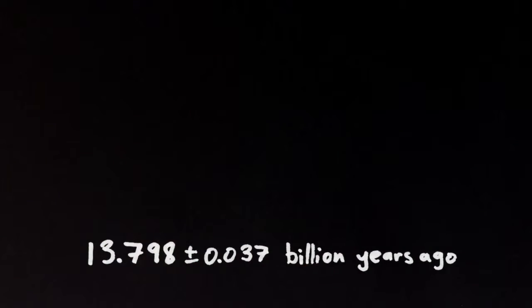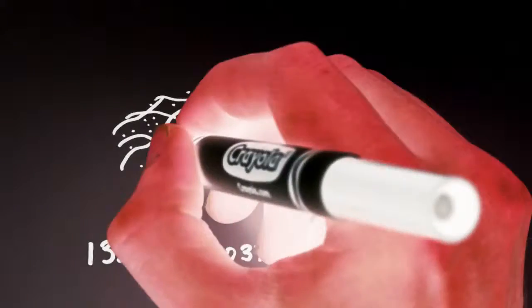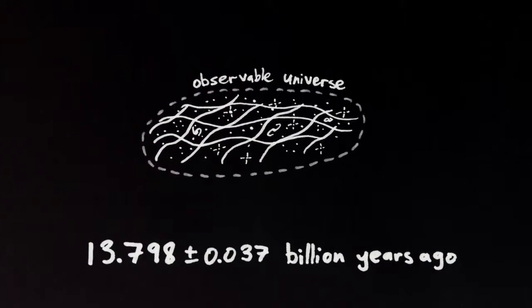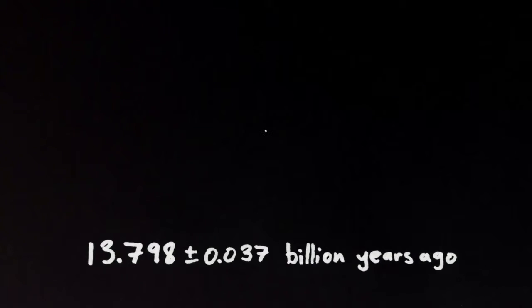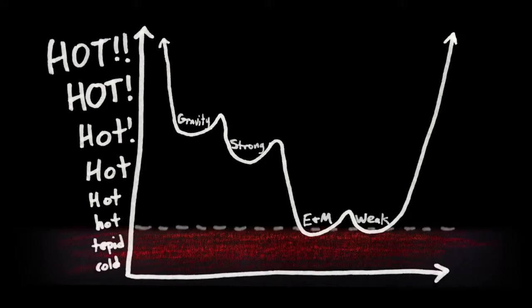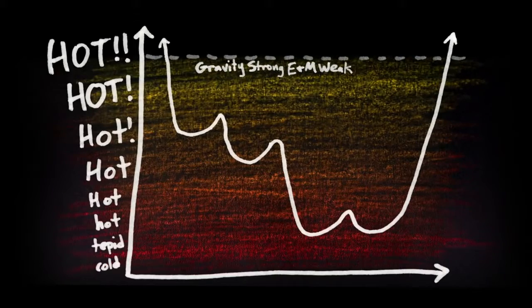In the beginning, about 13.7 billion years ago, all the space and all the matter and all the energy of the known universe was contained in a volume less than one trillionth the size of the point of a pin. Conditions were so hot, the basic forces of nature that collectively described the universe were unified.